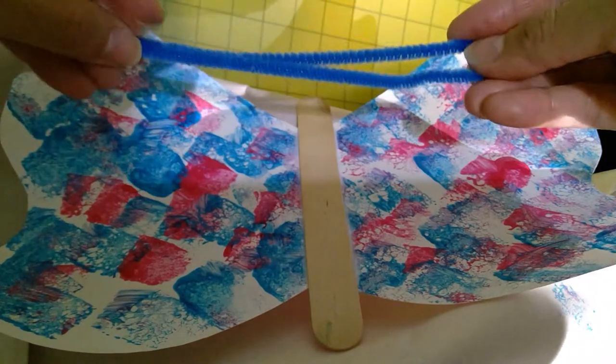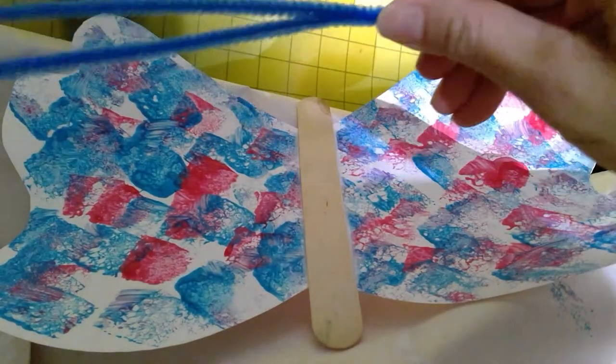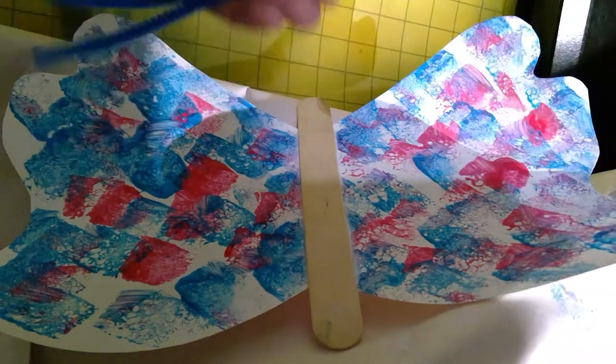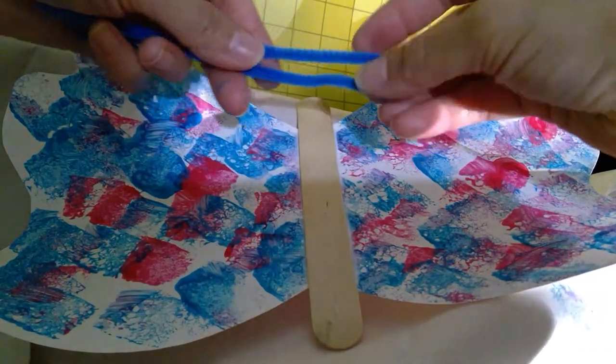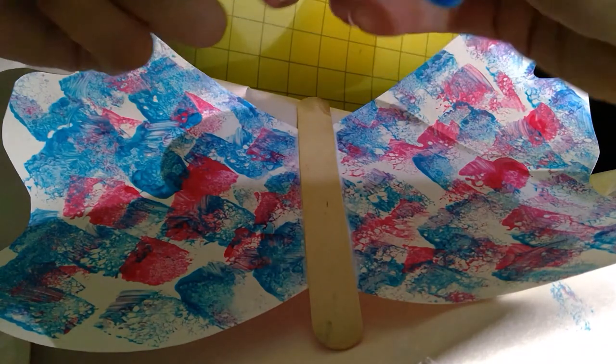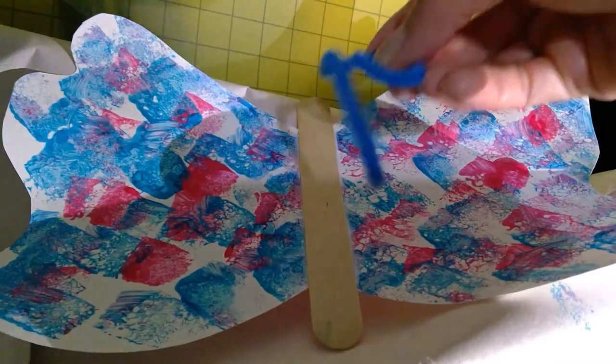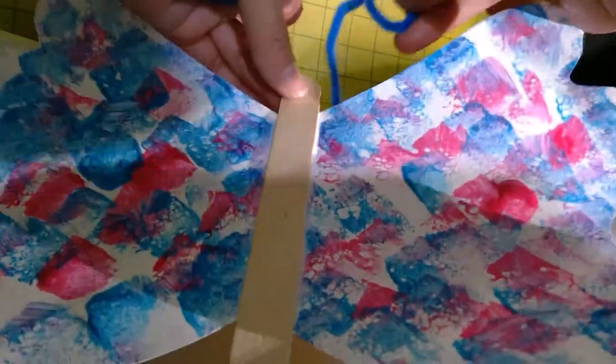After you're done cutting them, you will curl it up a little from the top to make a little curly like that so you can glue it on into the stick.